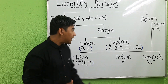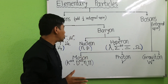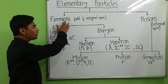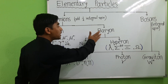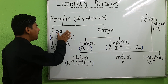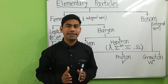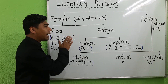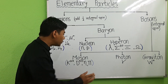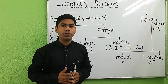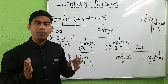Fermions are divided into two classes: first is lepton and second is baryon. Leptons are fermions which obey Fermi-Dirac statistics. Leptons are light particles with masses less than that of the pion, that is, pi meson.